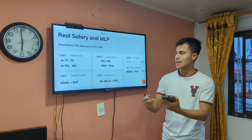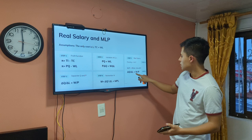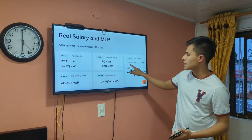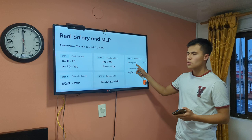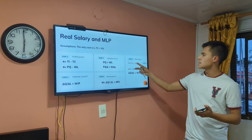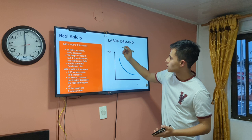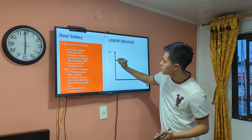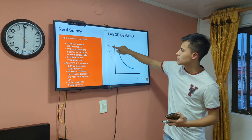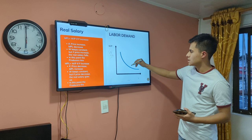We now have the real salary on one side. Remember that the slope of the production function is also called the marginal product of labor. So we have that the marginal product of labor equals the real salary. Replacing accordingly, we get a decreasing curve, and this curve is the labor demand.